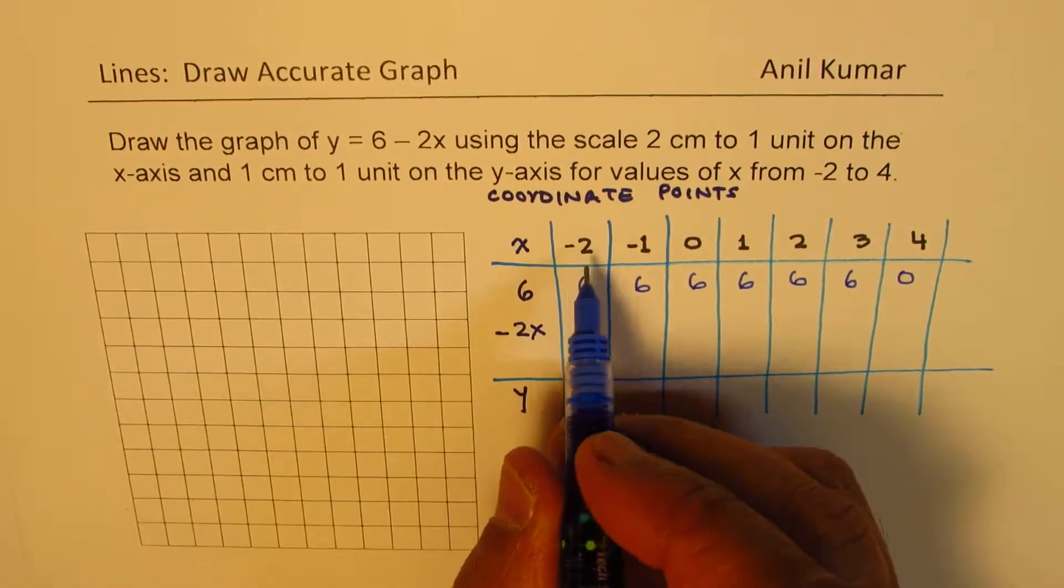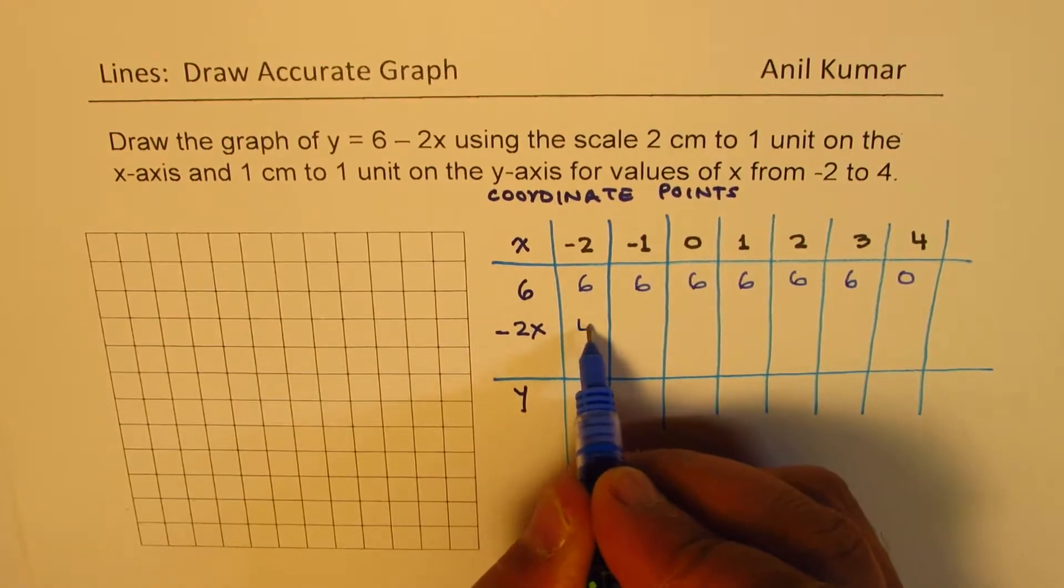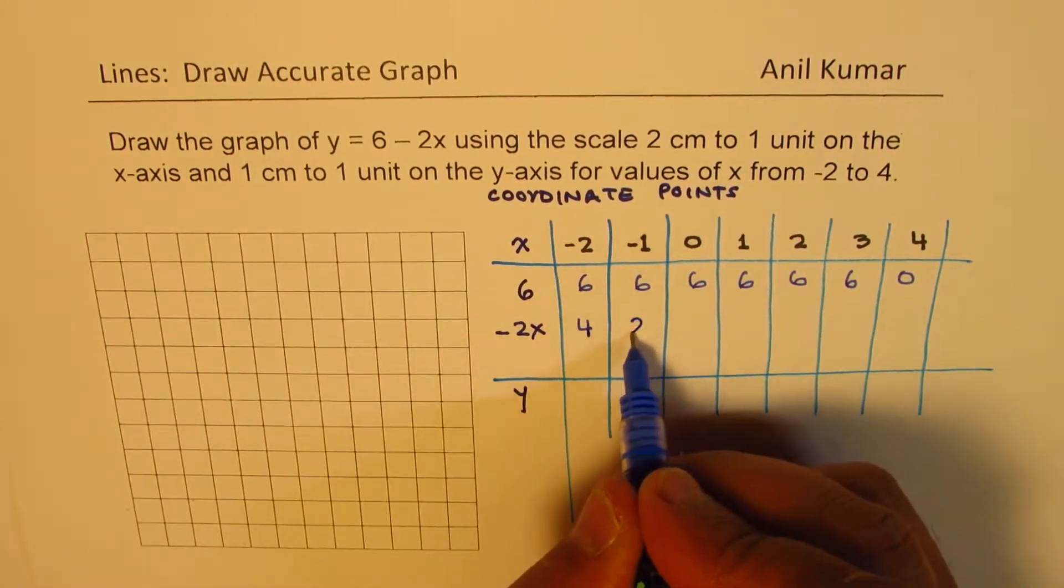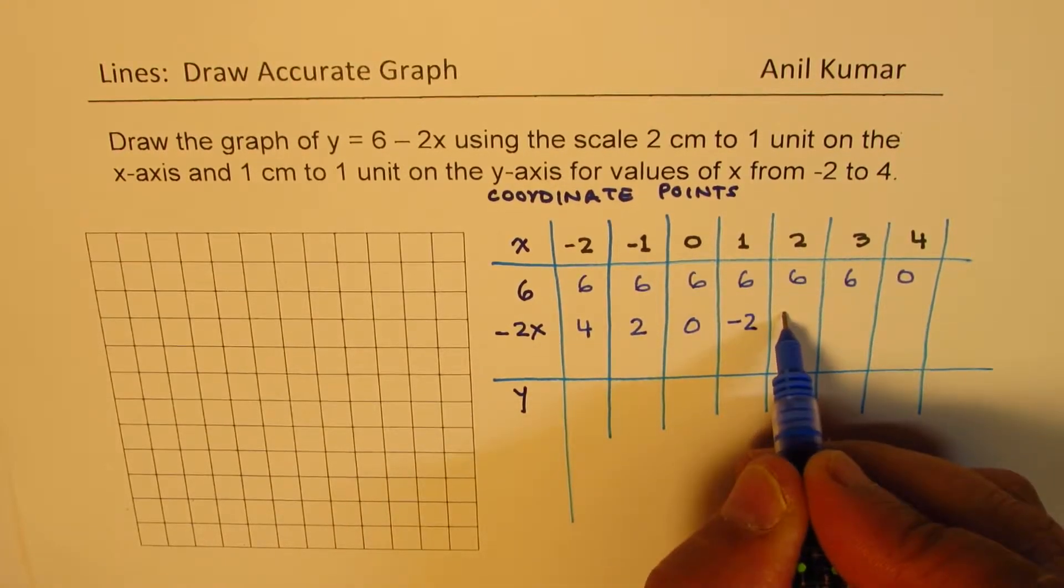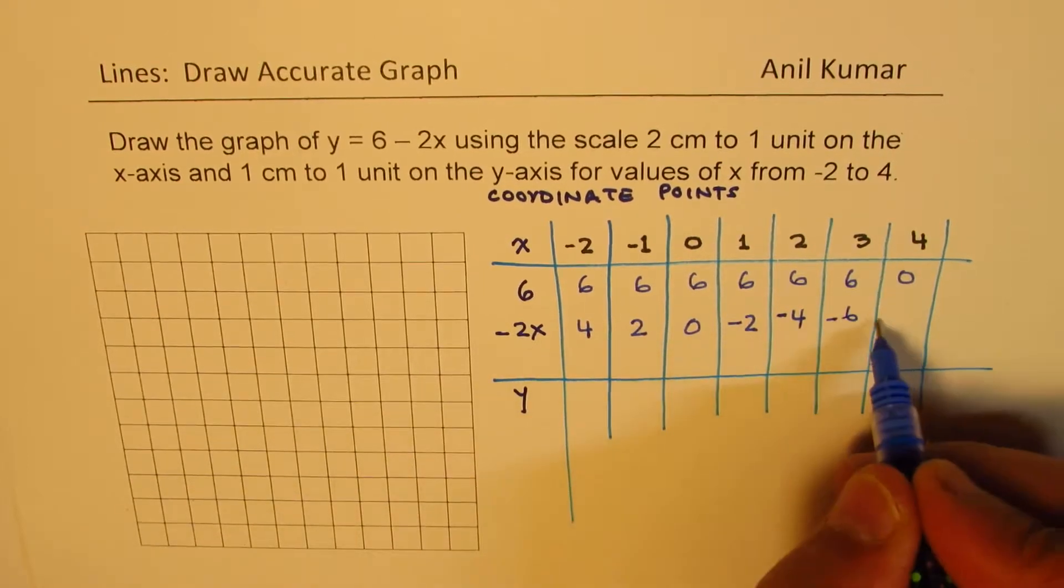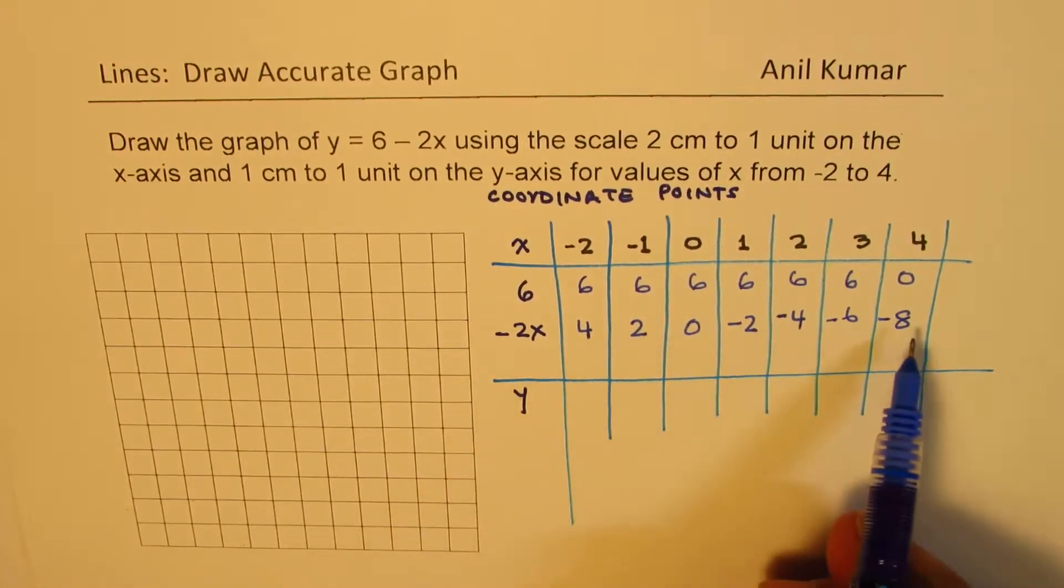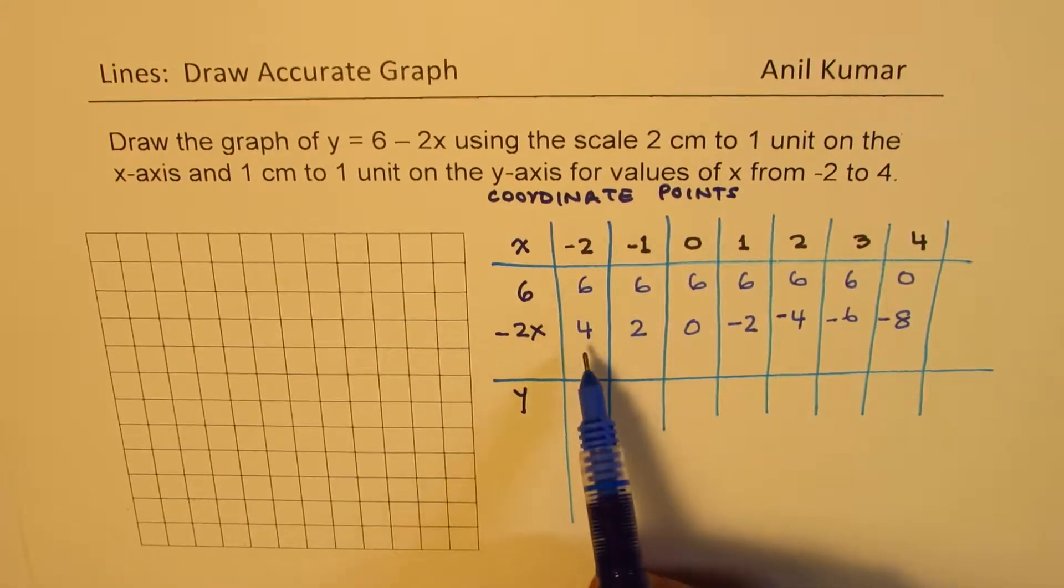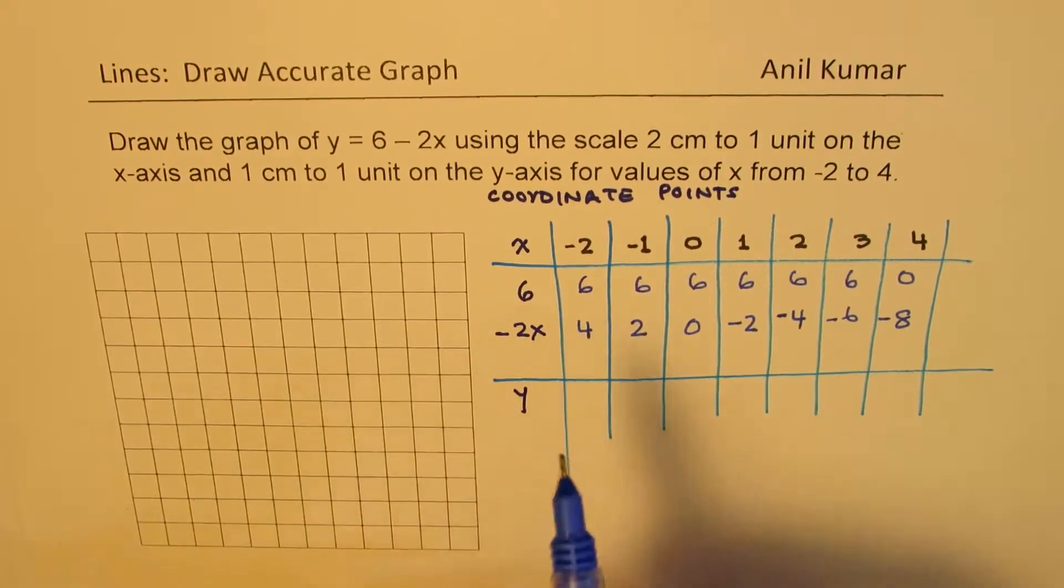Minus 2 times this means minus and minus makes it positive. So it becomes plus 4. In this case, it would be 2, 0. Here will be minus 2, minus 4. Now plus minus 6 and that gives us minus 8. Now the idea is we already have these values. So we have to just add them.